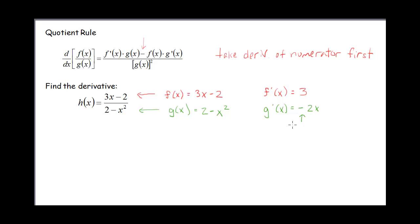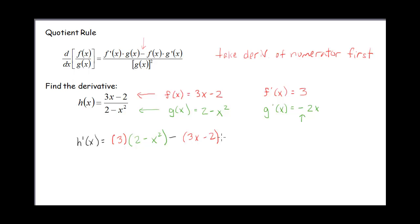Watch out, because that negative sign is the thing that gets missed frequently. So our derivative h prime of x is going to equal: we put our derivative of f, which is f prime, first. So we have 3, and we're going to multiply that by our g, so I have 2 minus x squared. And then I'm going to subtract — here I have my f, so that's 3x minus 2, times the derivative of my g, which is negative 2x. And this is all divided by our g squared, so we're going to have (2 minus x squared) squared.